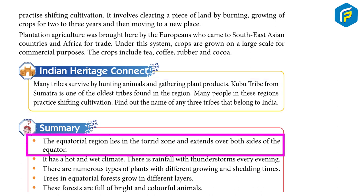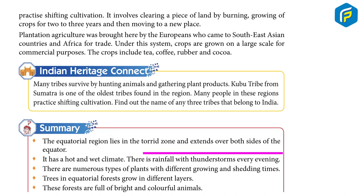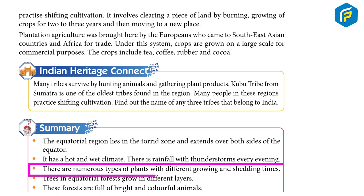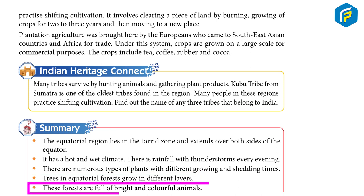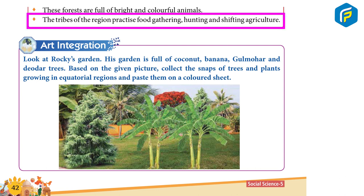Summary: The equatorial region lies in the torrid zone and extends over both sides of the equator. It has a hot and wet climate. There is rainfall with thunderstorms every evening. There are numerous types of plants with different growing and shedding times. Trees in equatorial forests grow in different layers. These forests are full of bright and colorful animals. The tribes of the region practice food gathering, hunting, and shifting agriculture.